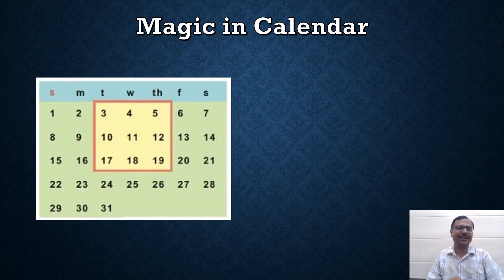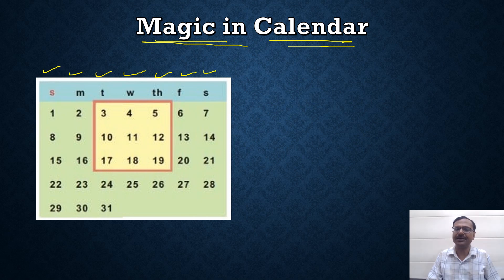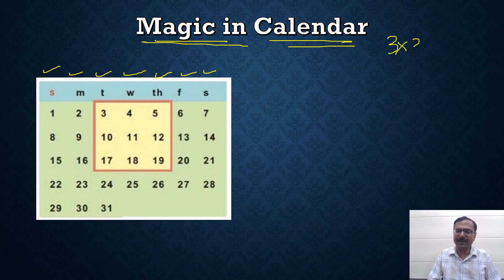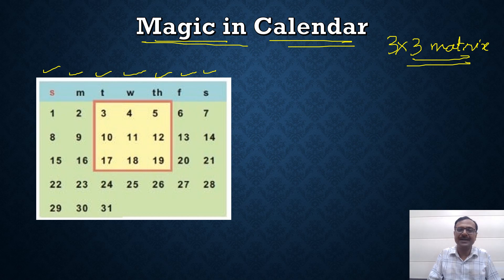Now let's see the magic. I picked up a random calendar — Sunday, Monday, Tuesday, Wednesday, Thursday, Friday, Saturday. If you pick up a 3×3 matrix from this calendar, just like I have already put a square there. So if you see 3, 4, 5 in the first row, 10, 11, 12 in the second row, and 17, 18, 19 in the third row — what is so special about this?